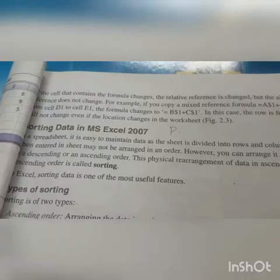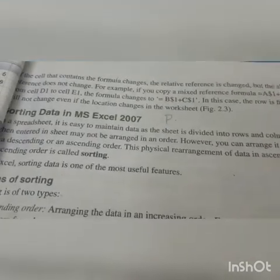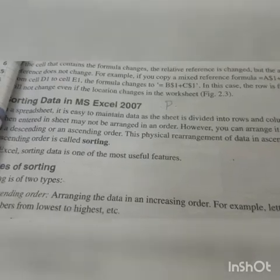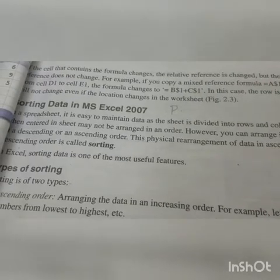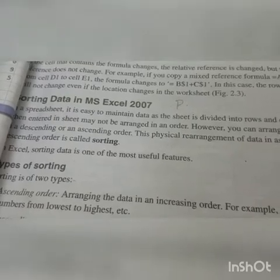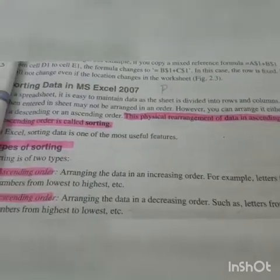Now we will do reading from the book. Open page number 15, chapter number 2, class 7 — Sorting Data in Excel 2007. Read with me: In a spreadsheet, it is easy to maintain data as the sheet is divided into rows and columns. Data entered in the sheet may be arranged in an order; however, you can arrange it in either ascending or descending order. The physical arrangement — now you can underline the definition of sorting.